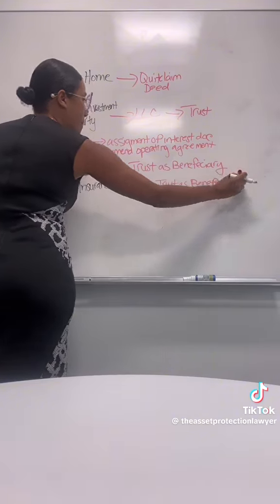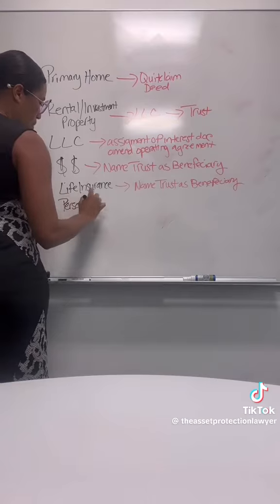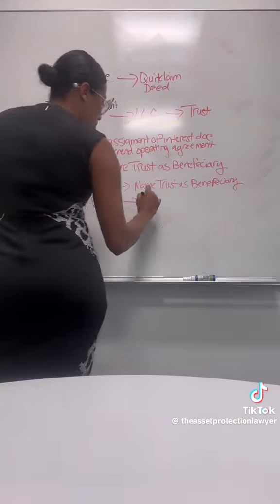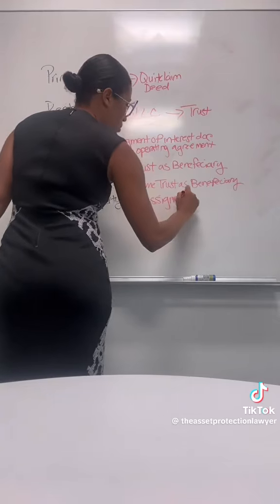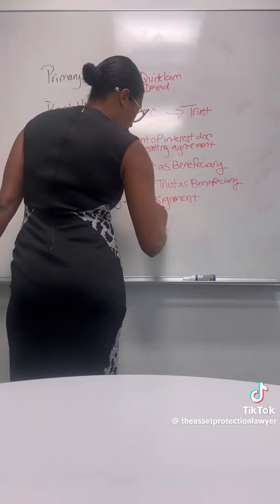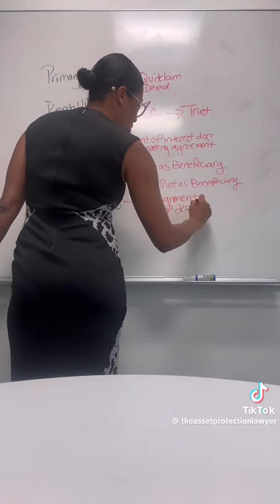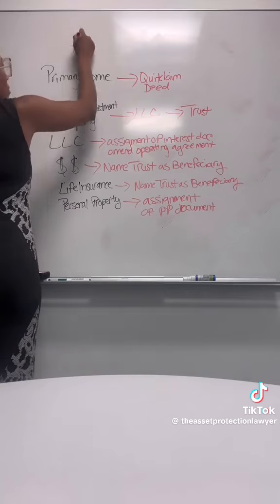And for personal property like furniture, jewelry, clothing — things that don't have a title — this can be transferred to the trust using an assignment of personal property document that assigns all of your property to your trust.